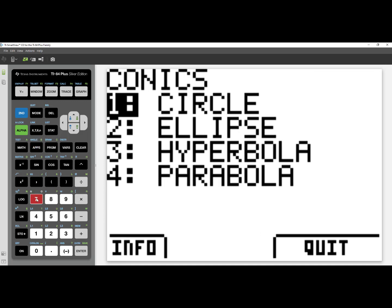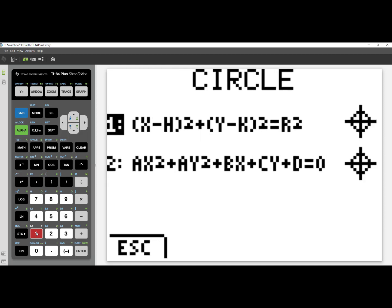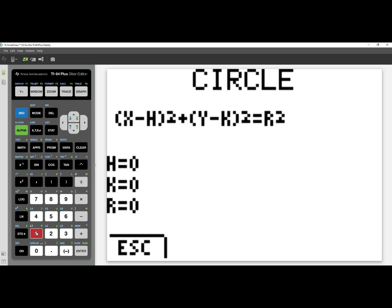And now let's look at the conics app as it appears on the 84 Plus. I see my conics menu: circle, ellipse, hyperbola, parabola. When I select number 1 for circle, I still see the standard form and center radius form. I'll select the center radius form. H, K, and R are right there.